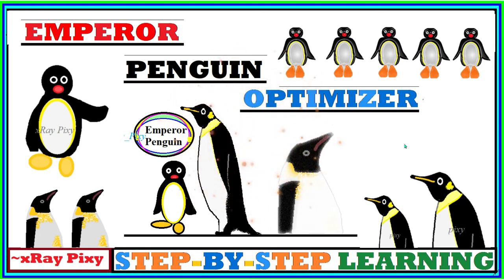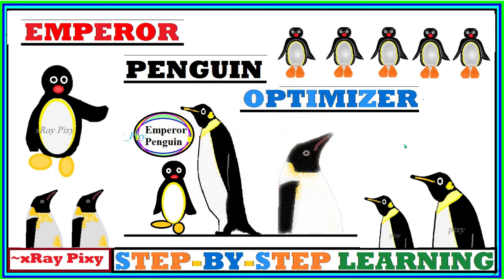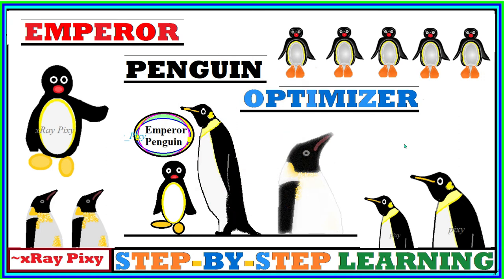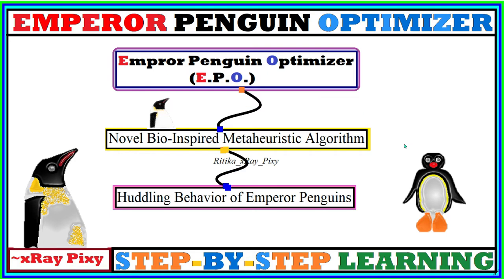This video is based on the novel optimization algorithm: the Emperor Penguin Optimizer. In this video, we will try to understand what this algorithm is all about, how it works, and the various mathematical models used to represent the emperor penguins' behavior, their movements, and other activities in this algorithm. First, we will start with the introduction. Emperor Penguin Optimizer is a bio-inspired metaheuristic algorithm inspired by the behavior of emperor penguins.